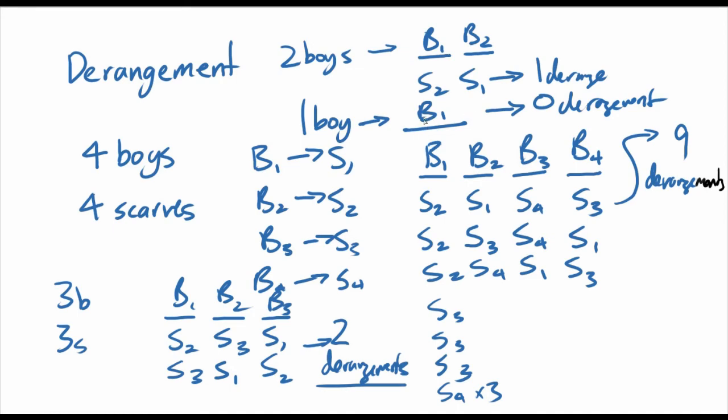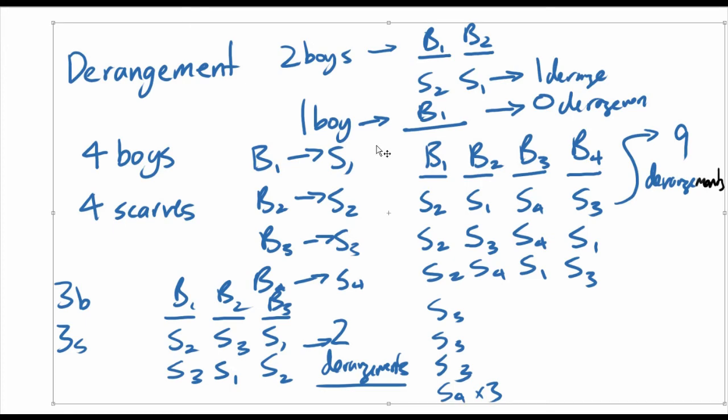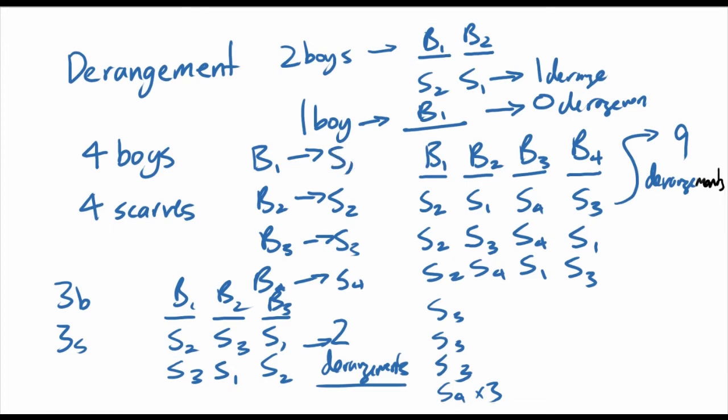Because you can't have the boy give something to himself. You can't have, the boy can only take his own scarf. There are zero derangements. There are zero ways in which the boy can take someone else's scarf and not have his own. And for one of the trivial cases, what about zero boys? Well, there's only one way you can have zero boys to not take their own scarf. They don't exist. So there's one way. There's one derangement.